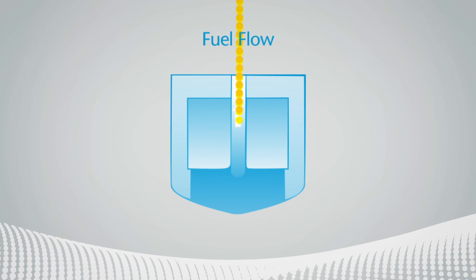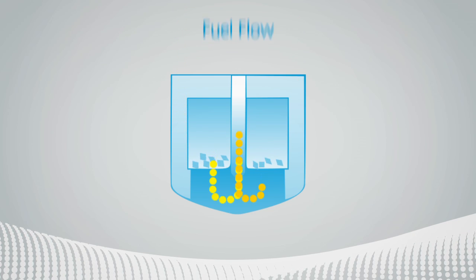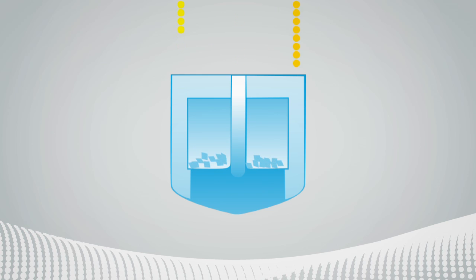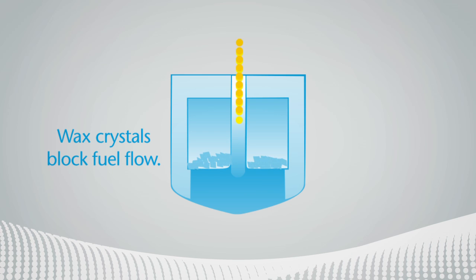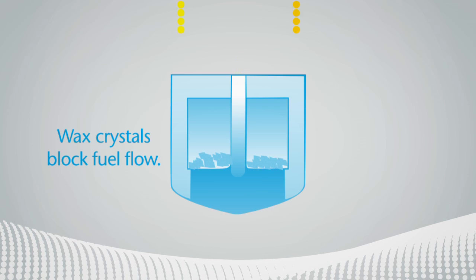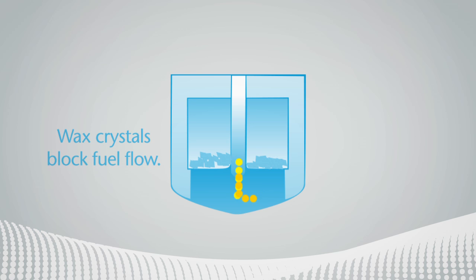A partially blocked fuel filter reduces fuel flow to the engine, which may result in vehicle operability problems. The risk may be even greater with biodiesel and its blends, which tend to gel at a higher temperature than fossil fuel.